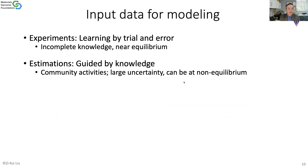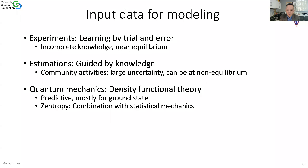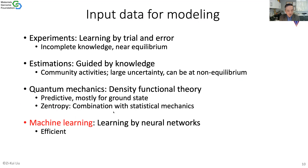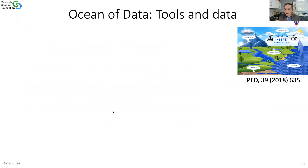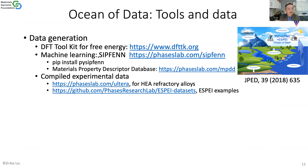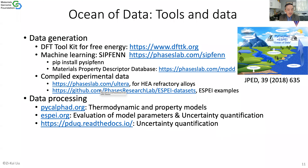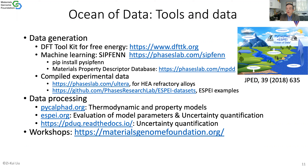Input data will include experiments, mostly at equilibrium state, estimation by knowledge with large uncertainty, and quantum mechanics mostly for the ground state. Zentropy, as I mentioned, combines density functional theory with statistical mechanics. Machine learning is becoming more and more powerful, making the process much more efficient. We have been working on data generation with DFT and DFTTK, and the Superfunds we talk about today, and the MPDD database also developed by Adam. We compiled data for different purposes and do data processing with PyCalphad and ESPEI, which we have had workshops on for the last several years, and also uncertainty quantification. Most importantly, we want to spread the knowledge to the community, so we have the Materials Genome Foundation to do that.